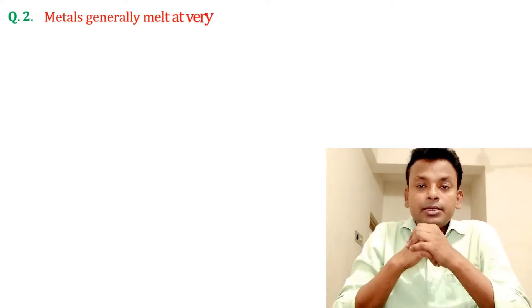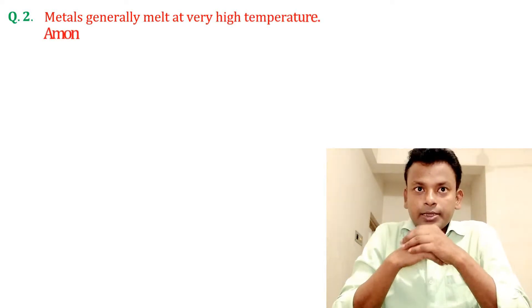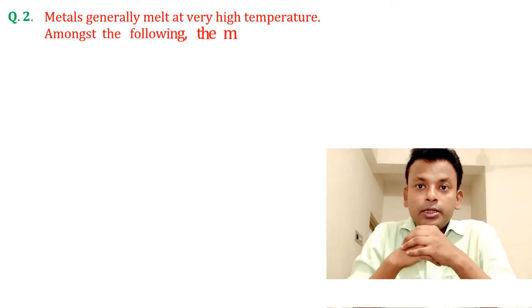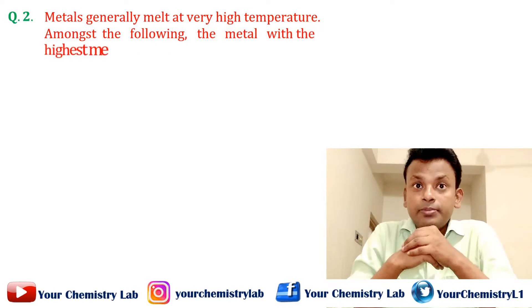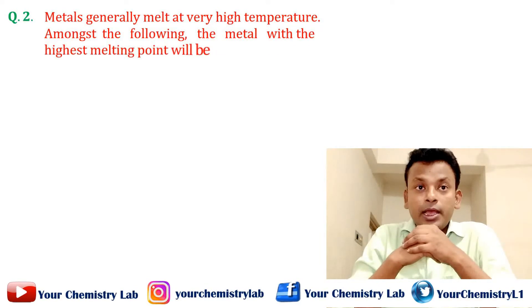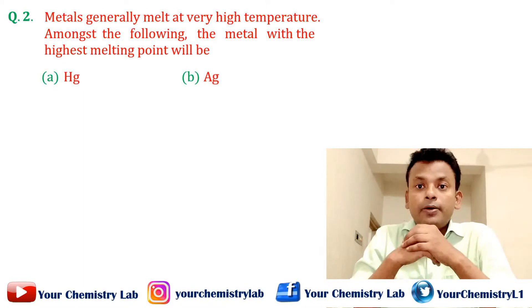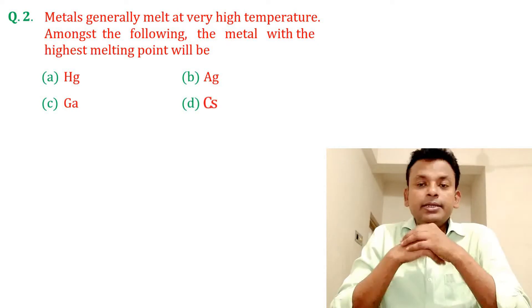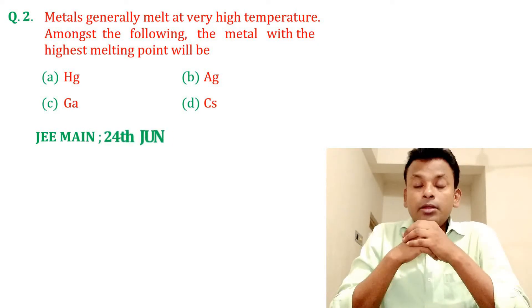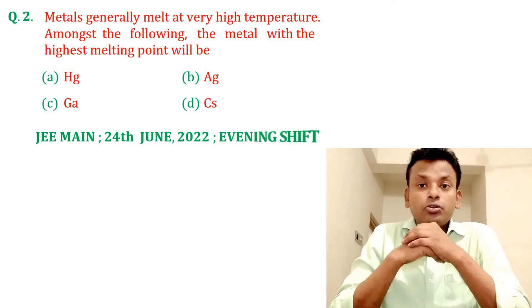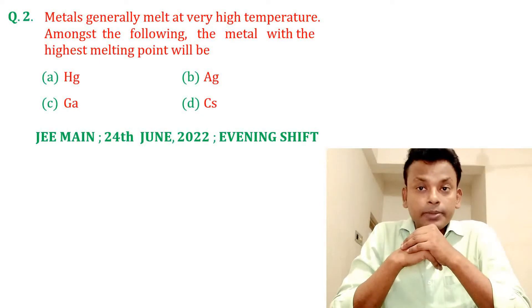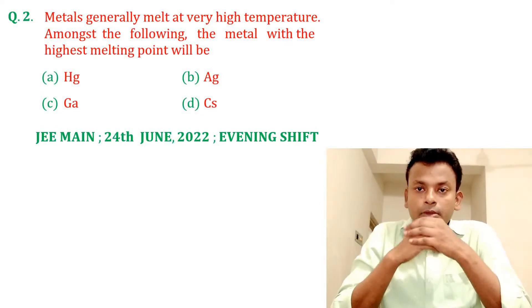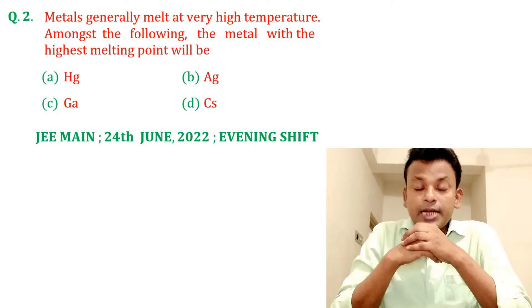Question number two: Metals generally melt at very high temperatures. Amongst the following, the metal with the highest melting point will be option A, option B, option C, or option D. This question was set in JMN 24th June 2022 evening shift. Answer: Option B is the correct answer.